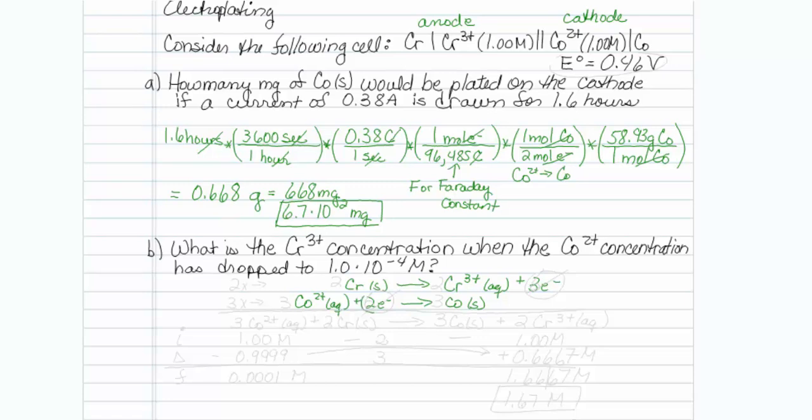I'm going to have to do something about this 2 electron, 3 electron thing. I'm going to have to multiply the top reaction by 2 times, and the bottom 1 by 3 times. So when I add these reactions together, I should have 3 cobalt 2+ aqueous plus 2 chromium solid going to 3 cobalt solid plus 2 chromium 3+ aqueous.